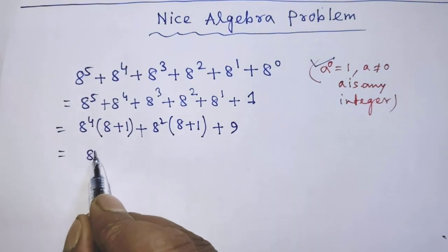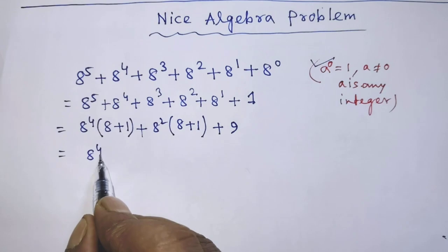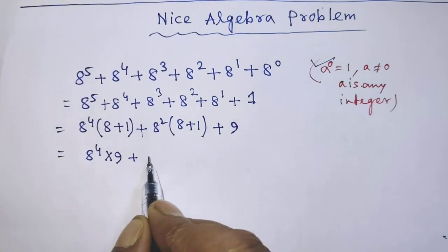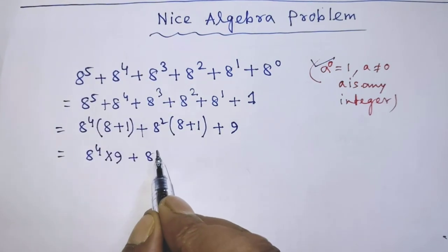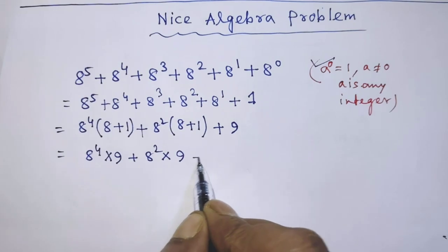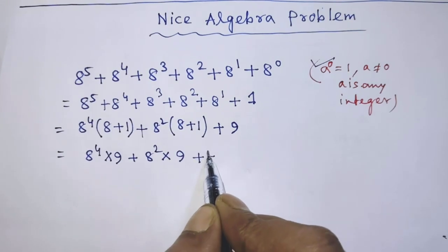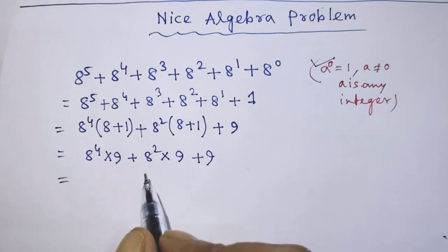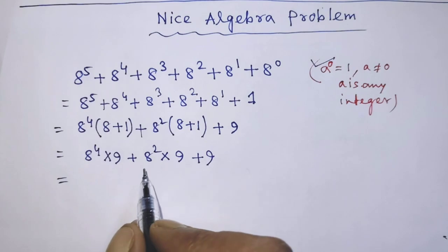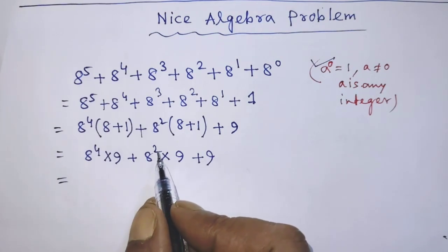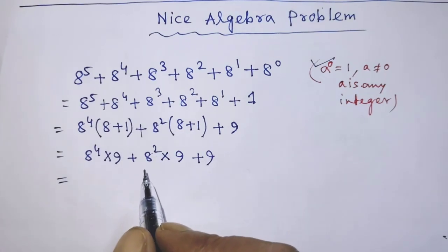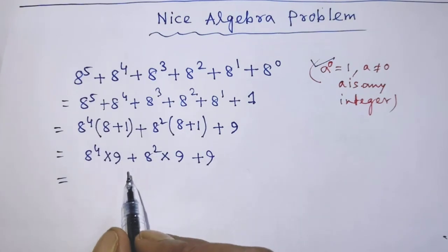After simplifying, it becomes: 8 to the power 4 times 9, plus 8 to the power 2 times 9, plus 9. The common factor of the first two terms is 8 to the power 2 times 9.